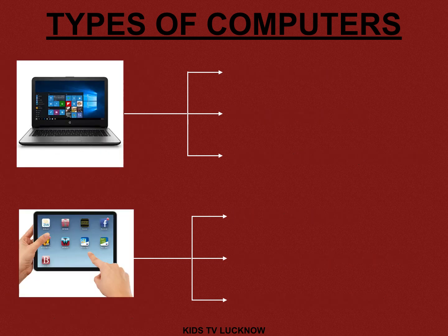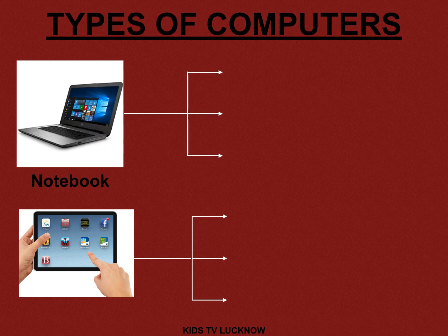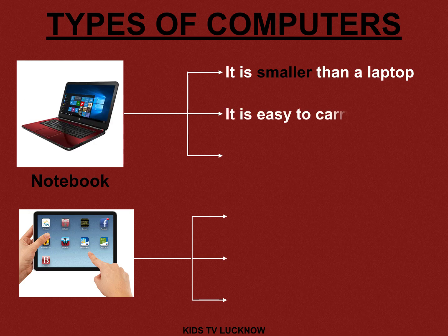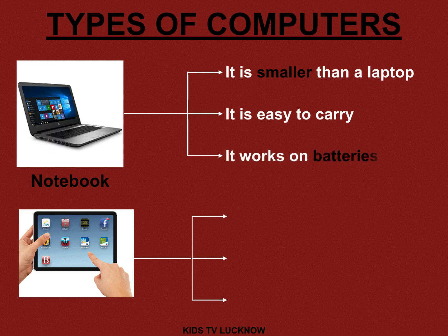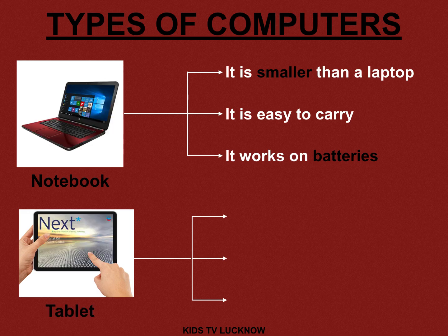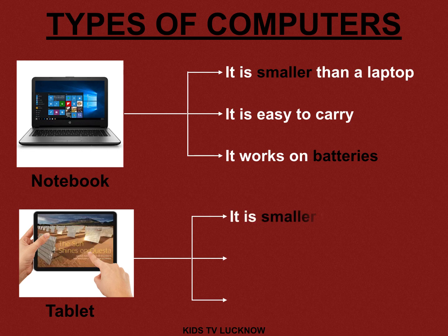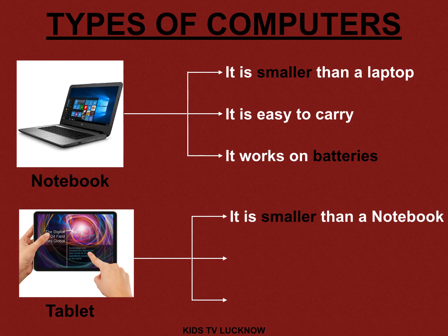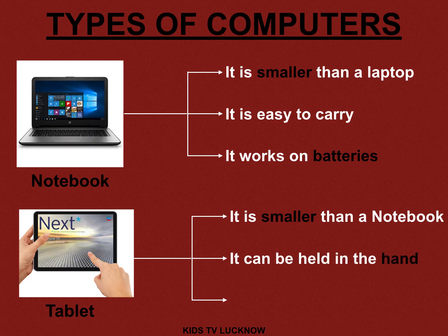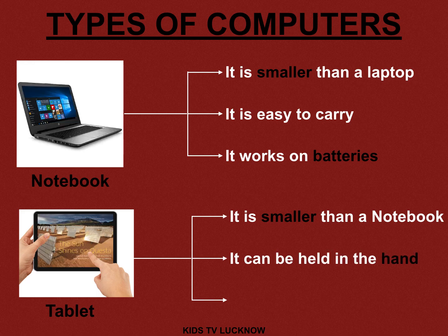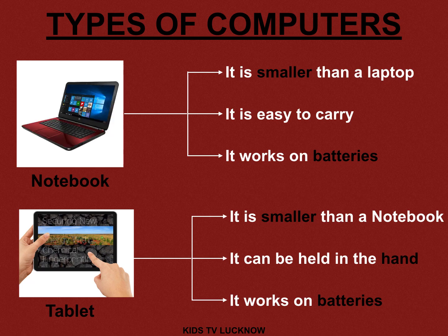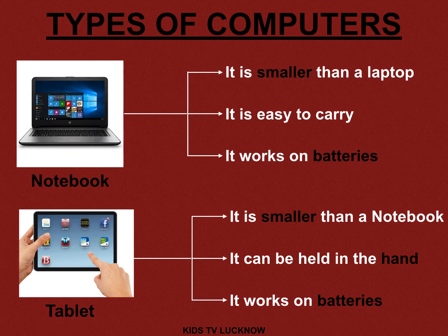The third computer is the notebook. It is smaller than a laptop and easy to carry. It also works on batteries. The last computer is the tablet. It is smaller than a notebook — as you can see. It can be held in hand, just like you use your mobile. It works on batteries. So these were the four types of computers.